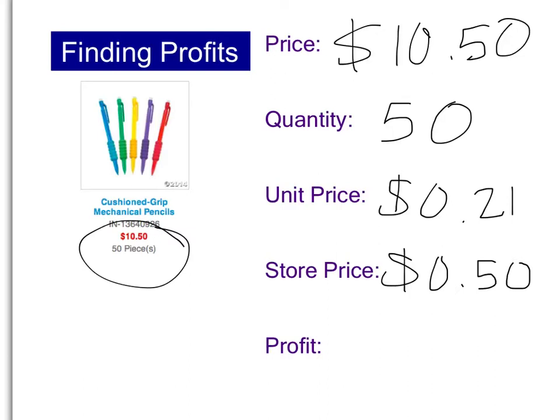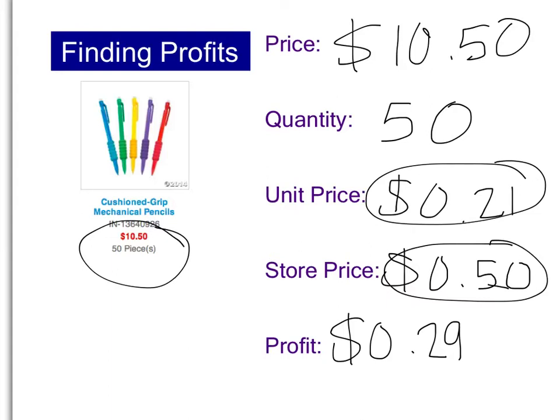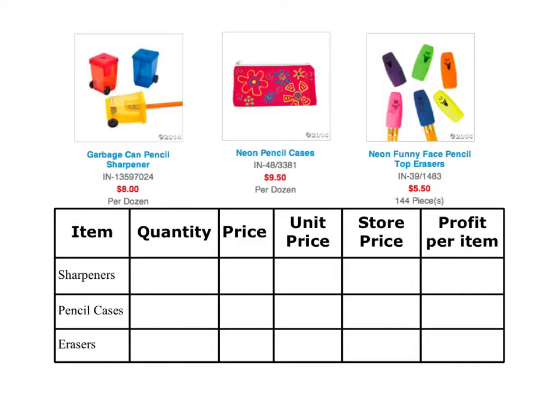So what would my profit be? If one is selling at 50 cents, I'm just going to subtract my 50 cents from the cost. So the price I'm getting minus the price I'm paying gives me a 29-cent profit on each one. If I wanted to know my total profit if I sold all of them, I'd take my 29 cents and multiply it by the 50 pencils, and I get a profit of about $14.50.